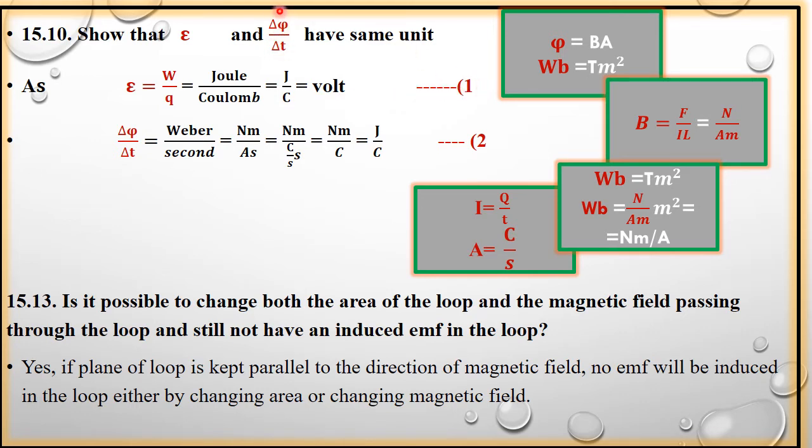Now, the other way delta phi over delta t, rate of change of flux ki unit ko find karte hain. Now, flux ka unit likhne ke liye, pehle flux ki definition par jate hain. Flux kis ke equal hote hain? Number of magnetic field lines passing through unit area. B dot A. Now, magnetic field ko kis mein measure karte hain? Tesla mein. Area ka unit kya hai? Meter square. So, overall flux ka unit kya hai? Weber.